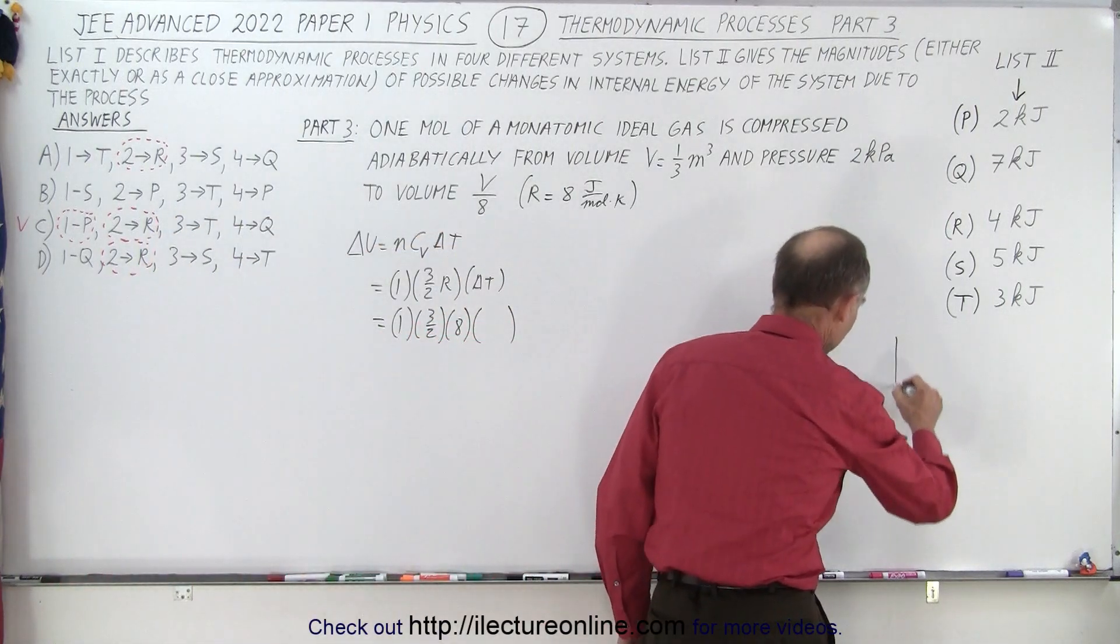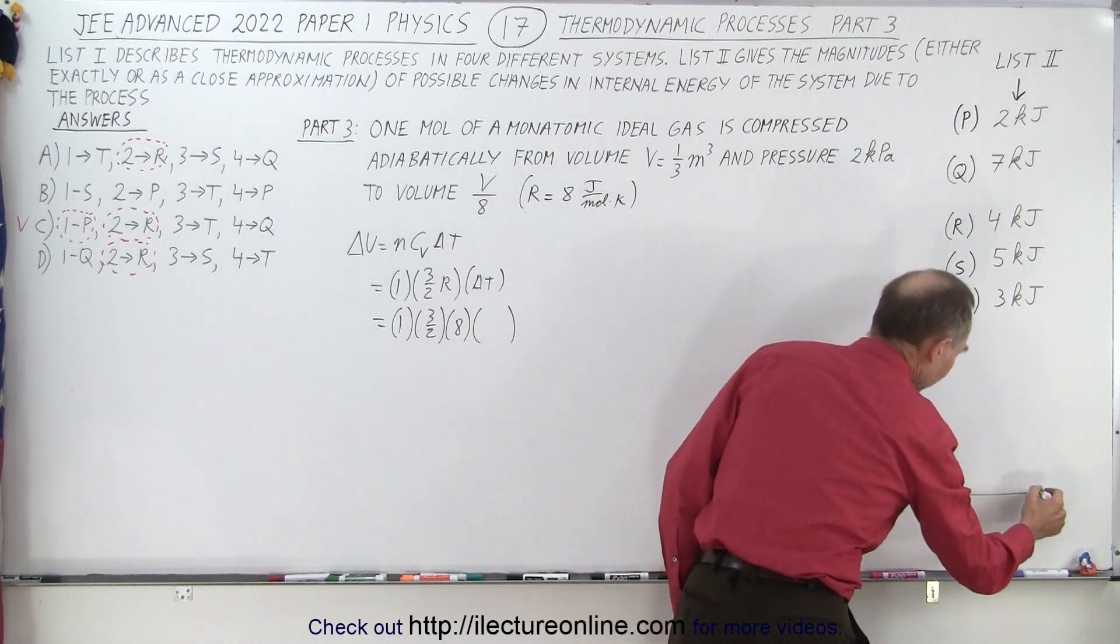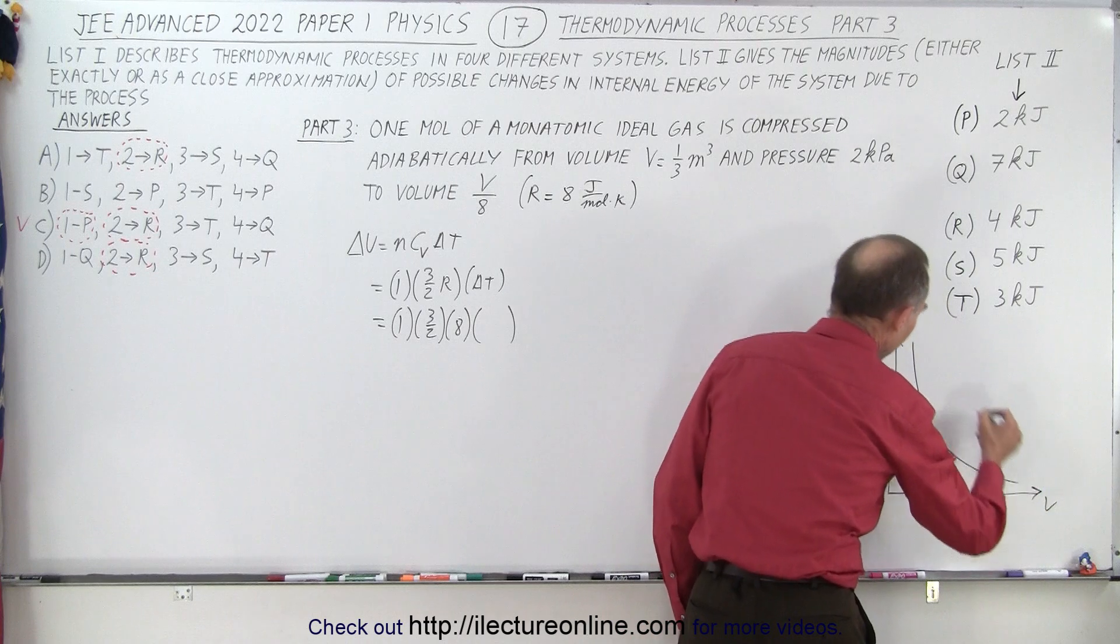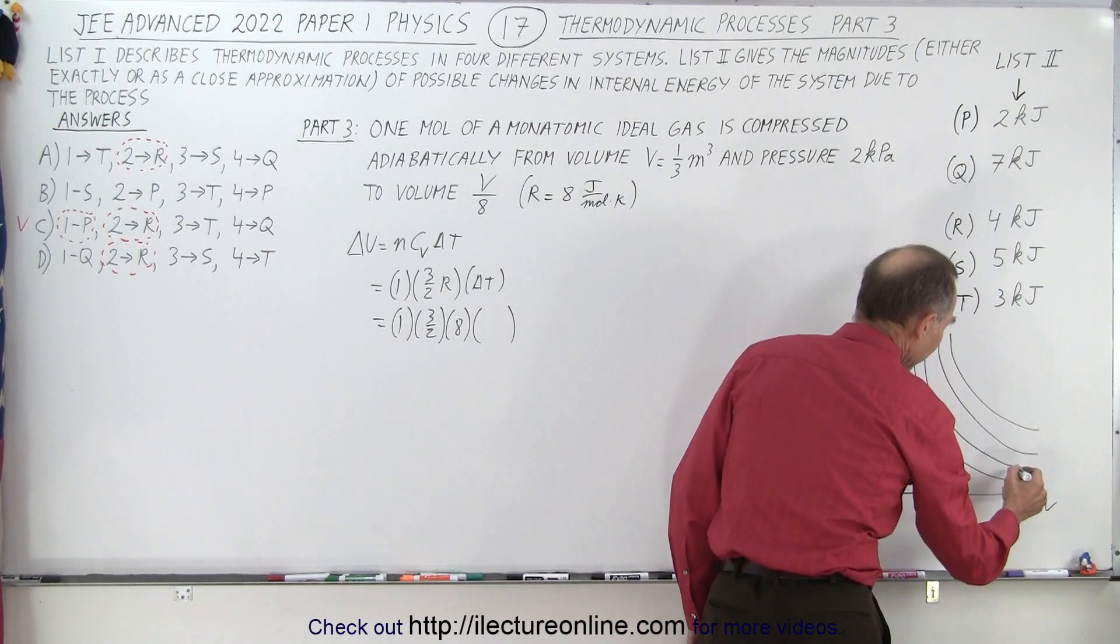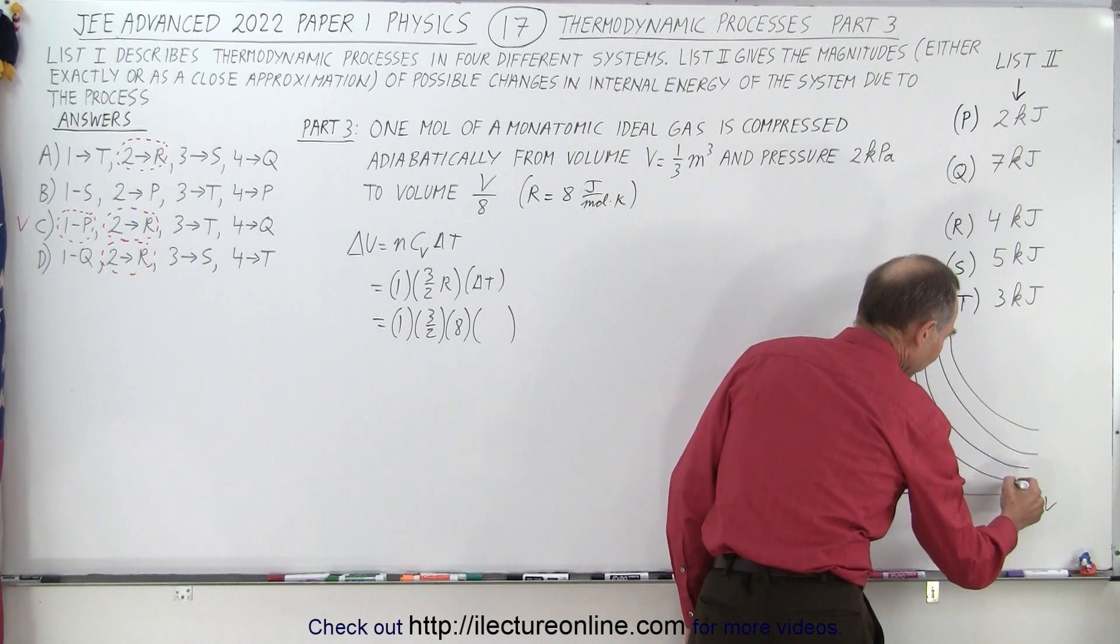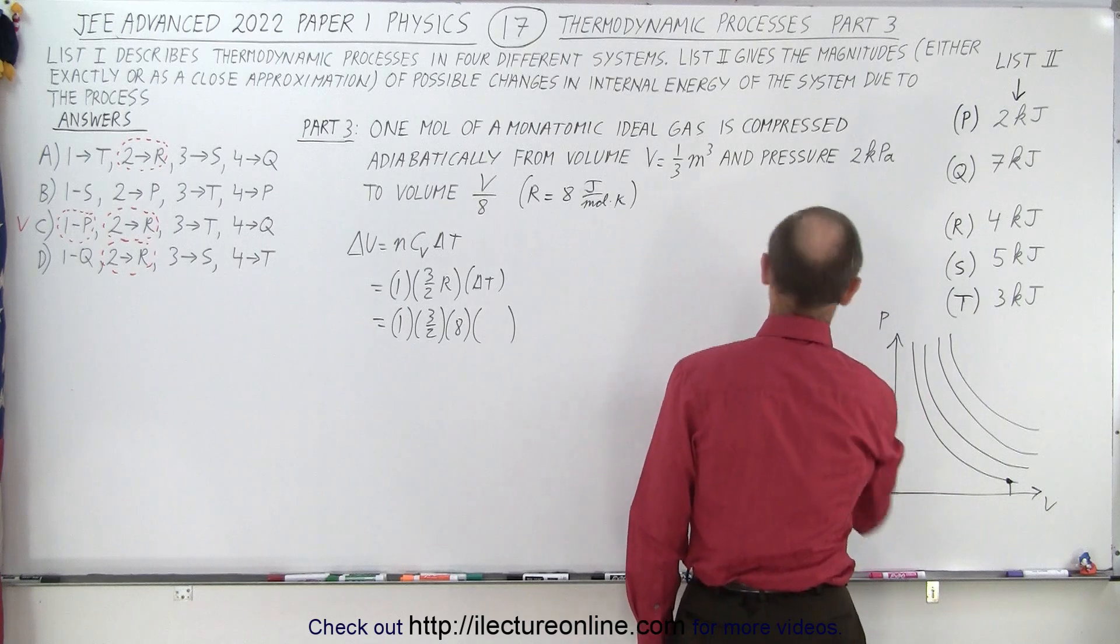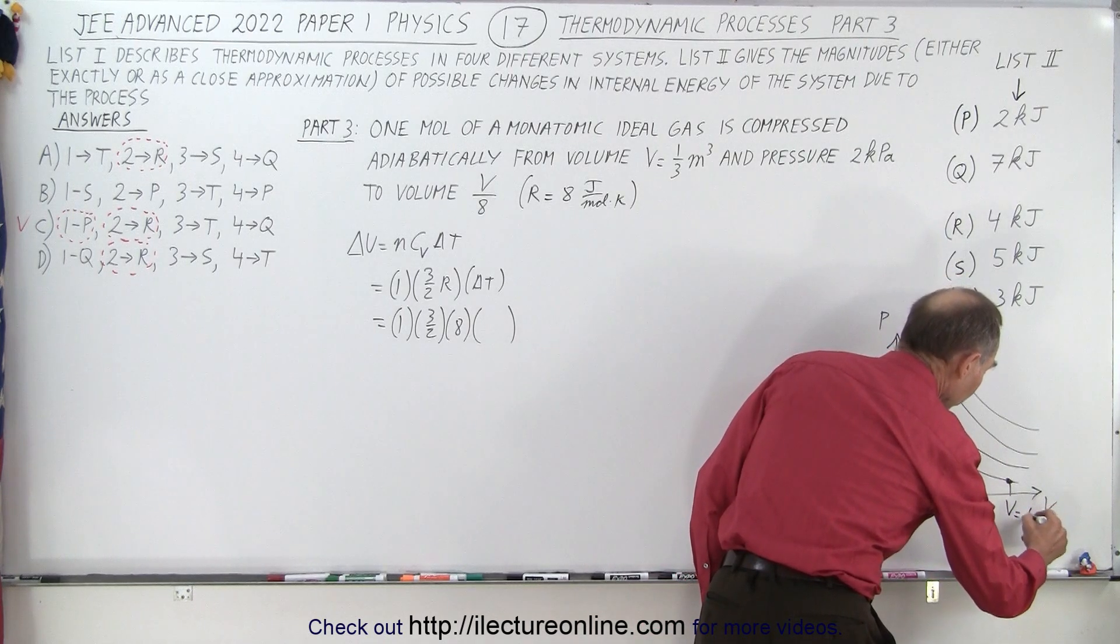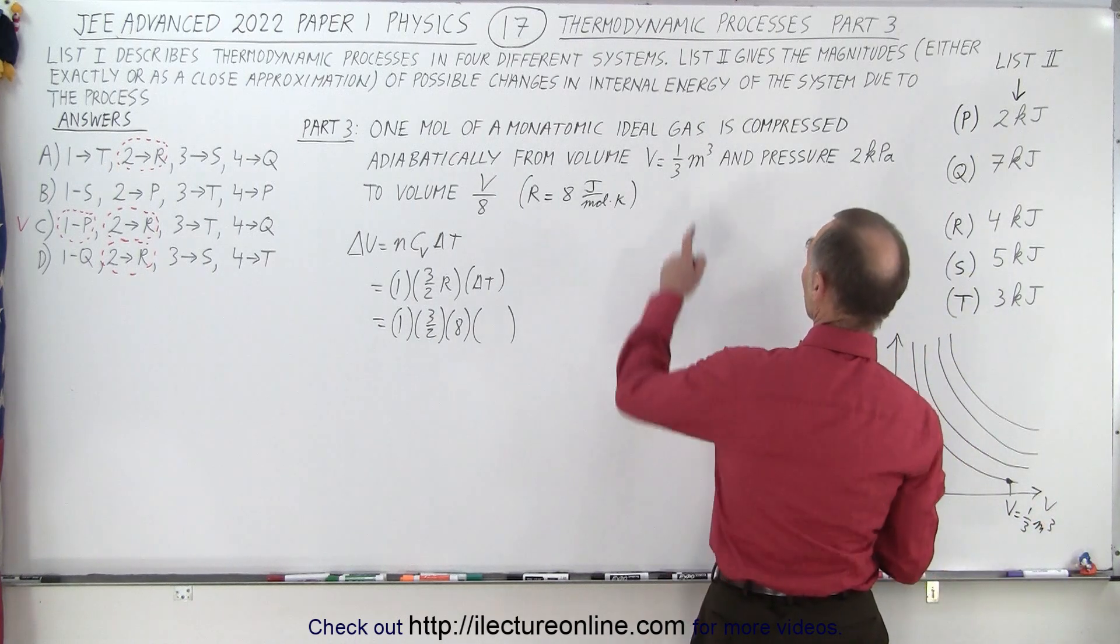Let's draw a PV diagram. We have the pressure on the vertical axis, the volume on the horizontal axis. Here are the isotherms. It's always a good idea with adiabatic process to draw isotherms. Notice that we're compressing a gas from some initial volume V, which is one-third cubic meters.